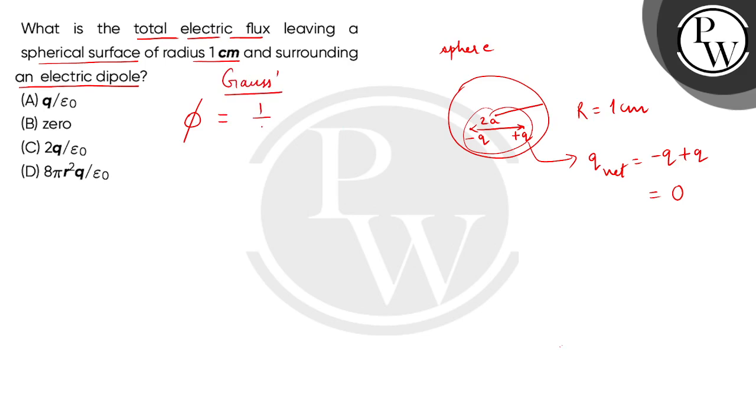flux is equal to 1 by epsilon naught times the total charge enclosed by the surface. So this is 1 by epsilon 0 times the total charge or net charge is 0.